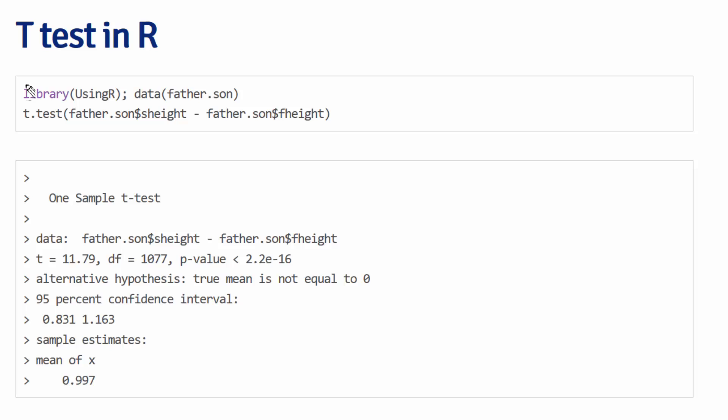Let's look at, in the UsingR package, the data father.son. We'd like to test whether the population of son's height was equivalent to the population mean of father's height. The observations here were paired—it was one son's measurement to one father's measurement, and so on. In this case, we're going to take the difference and we want to test whether the difference in the heights is zero or non-zero.